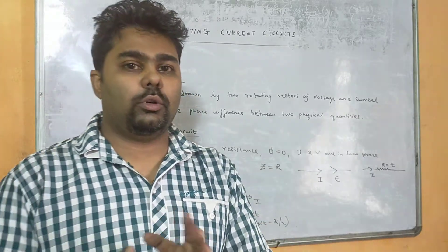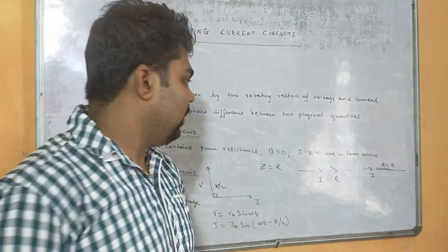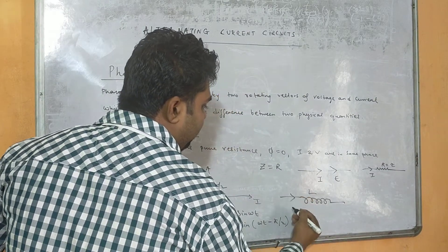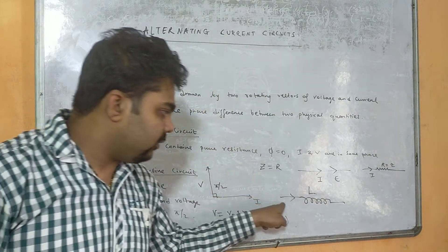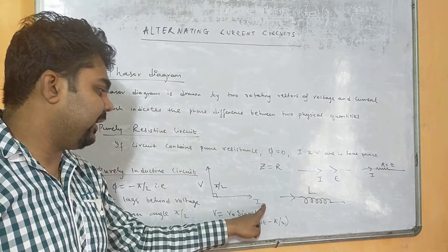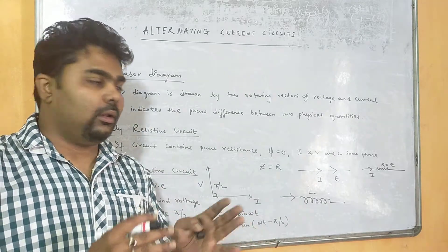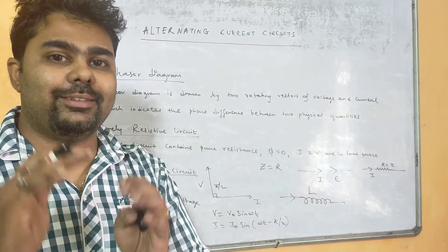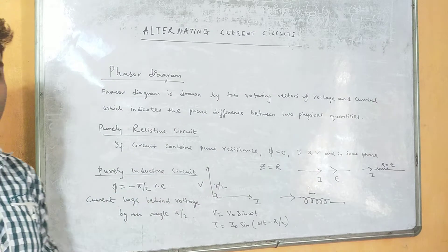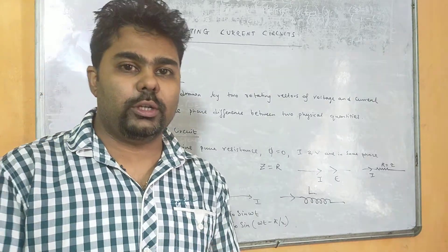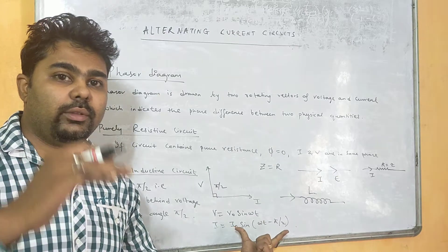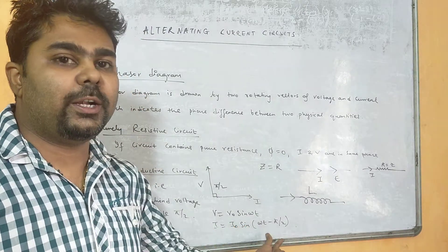Now we draw the phasor diagram for a purely inductive circuit — a circuit containing only a coil, an inductor L. When alternating current passes through an inductor, the phasor diagram shows that current is lagging by 90 degrees. Voltage is leading and current is lagging. If V equals V₀ sin(ωt), then current is written as I equals I₀ sin(ωt minus π/2). The phase difference φ equals π/2, or 90 degrees.